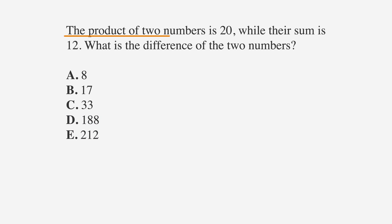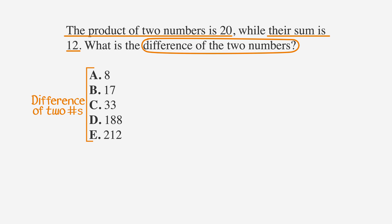As always, we'll underline the facts, circle the key words, and label the answer choices. To solve this, we need to start by using our problem to write some equations. The product of two numbers — let's call them x and y — is 20. That means we have two unknowns that we're multiplying together. The second sentence tells us that their sum is 12, so x plus y equals 12, but we're looking for the difference of the two, or x minus y. Let's start by listing the factors of 20, the numbers that multiply together to get 20.